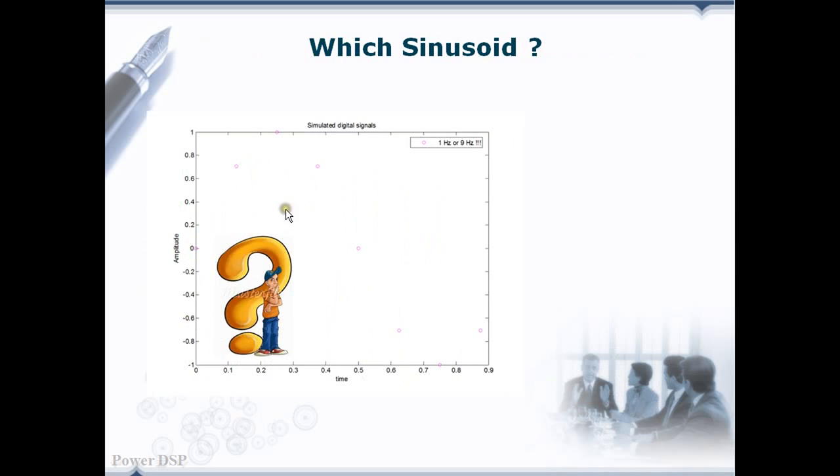Suppose if I give the same exact samples to you and ask you to find out from which signal these samples are taken, what is your answer? Some may tell these samples might have been taken from 1 Hz and some may tell these samples might have been taken from 9 Hz signal. Which one is correct? This is an ambiguity.